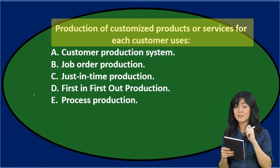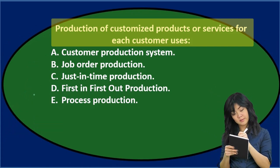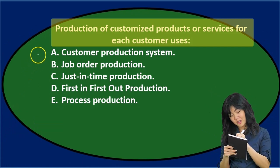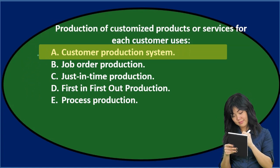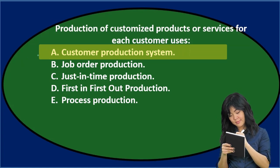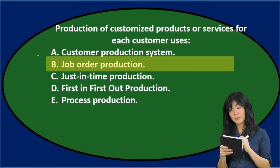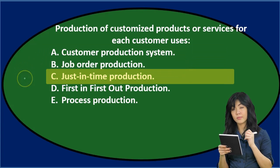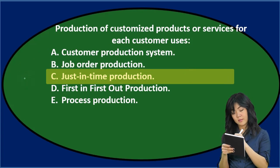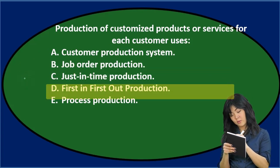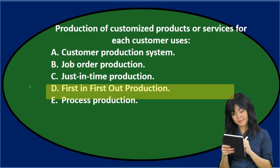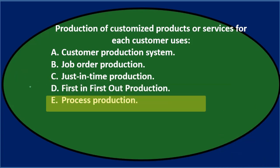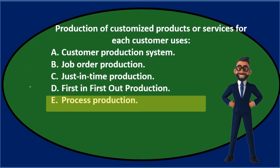Next question: production of customized products or services for each customer uses either A) a customer production system, B) job order production, C) just-in-time production, D) first-in-first-out production, or E) process production.